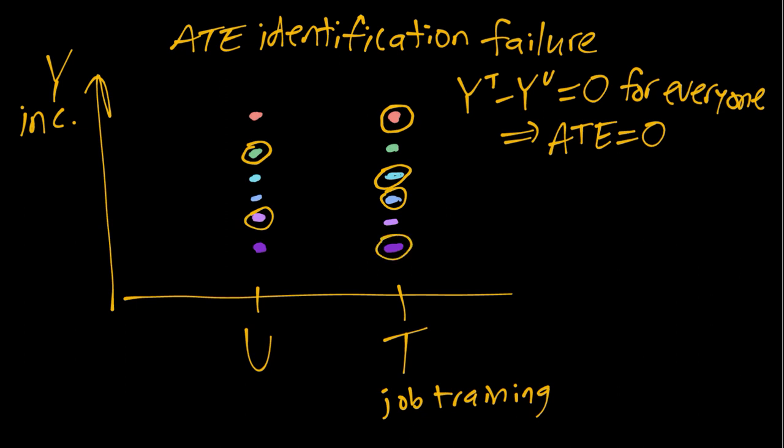As you recall, we can only for each individual observe either the treated potential outcome or the untreated potential outcome. In this case, the ones I've circled are the ones that we actually observe in our universe.